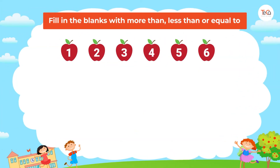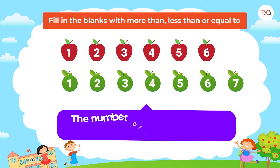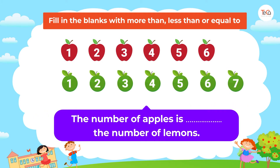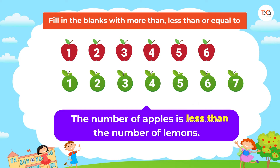Next, we have seven lemons. The number of apples is ___ the number of lemons. So the number of apples is less than the number of lemons.